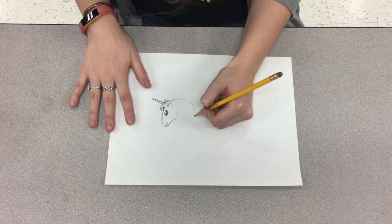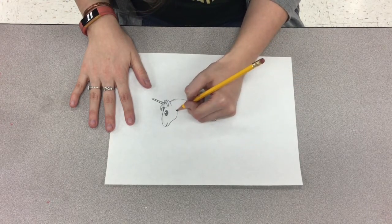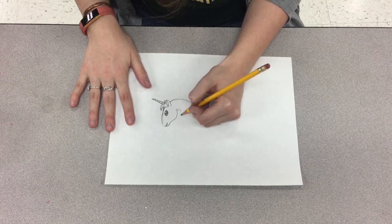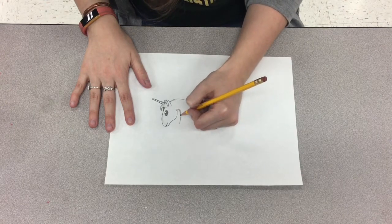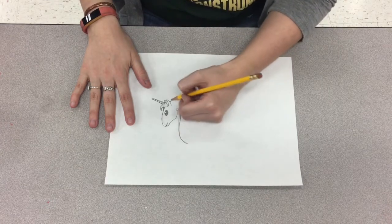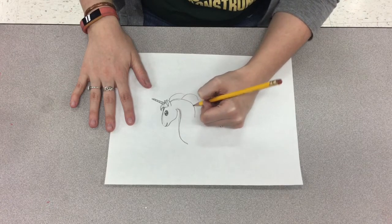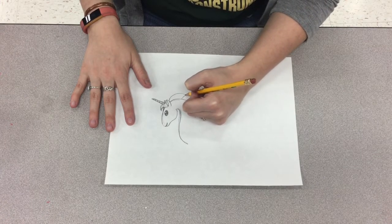This part may get a little tricky. You are going to start the neck and then you will add the mane of your unicorn on. So it's kind of like a swan's neck right now. It kind of has an S shape but backwards. Now I'm doing the mane of my unicorn.